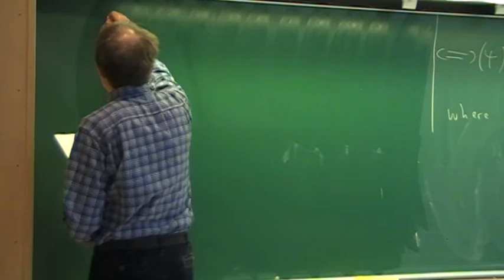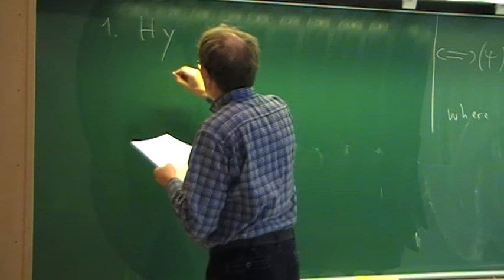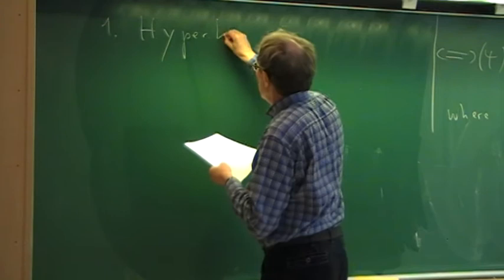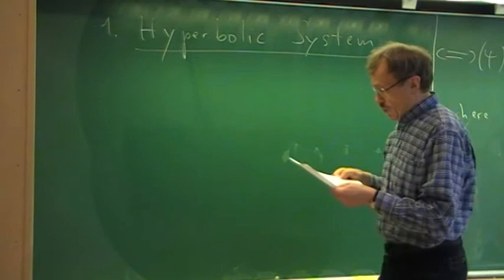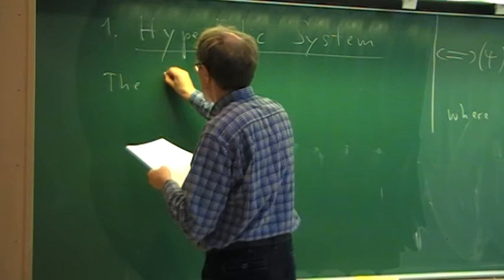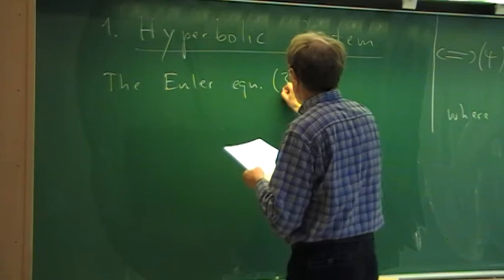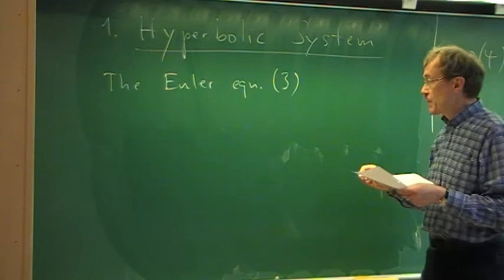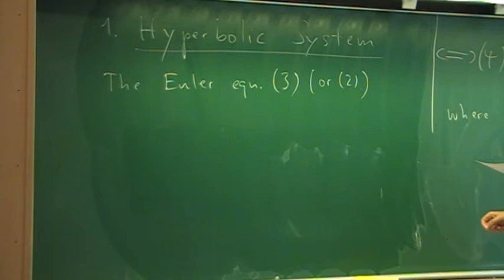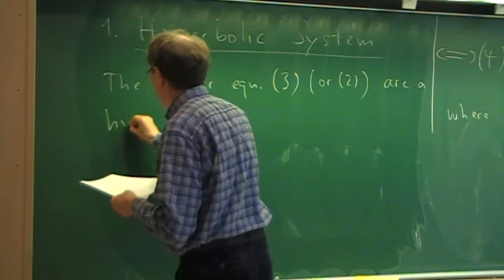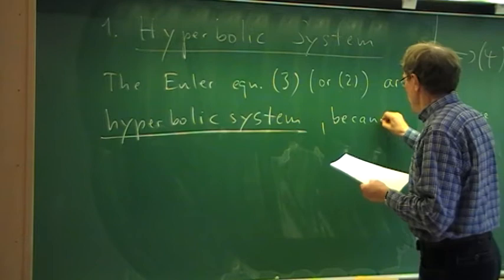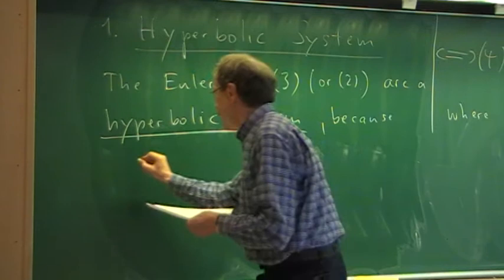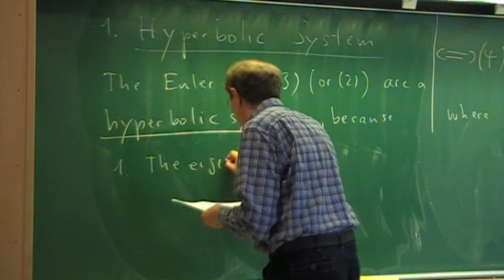This brings us to the mathematical description of the partial differential equation we are dealing with. The 1D Euler equations are an example of a hyperbolic system. We can state that and give the definition of what that means. The Euler equations — whether in non-conservative form with primitive variables or in conservative form with conservative variables — are a hyperbolic system.